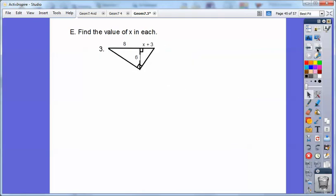Let's try another one. Now another altitude. That altitude is the geometric mean between both pieces of the hypotenuse. So the 8 and the X plus 3. And then cross multiply.